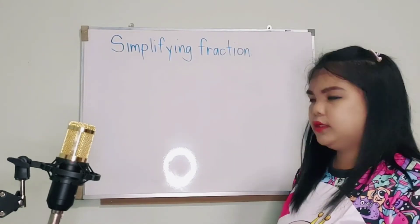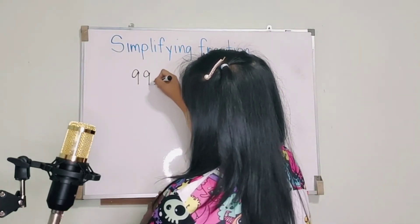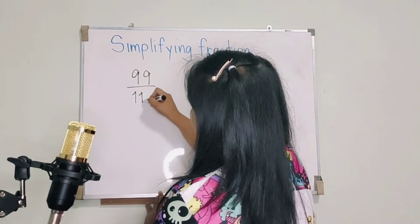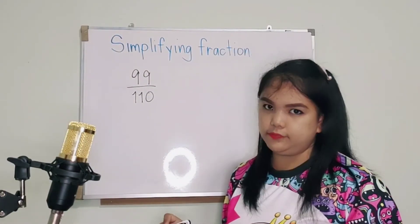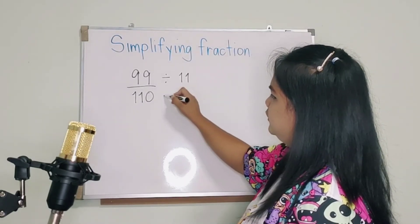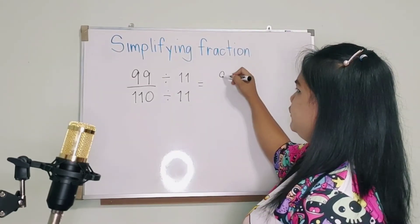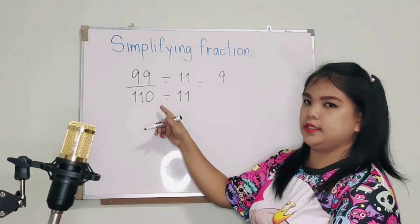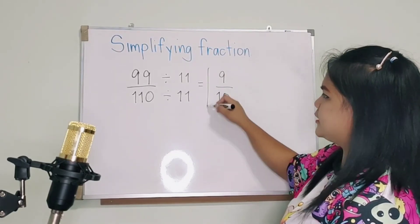Next. Let's try another one. We have 99 over 110. What number can divide for this? Yes. I will use 11. So what will be now? 99 divided by 11, you will get 9. 110 divided by 11, you will get 10. And that is the answer.